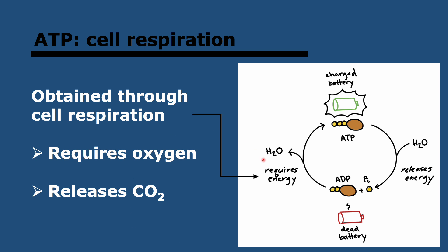The rate of cell respiration can be determined from measurements such as oxygen uptake or carbon dioxide production, and this can be measured with things like a respirometer. This is important and is in the syllabus. To calculate the actual rate, you can, for example, measure oxygen uptake and divide the volume of oxygen used over the amount of time.